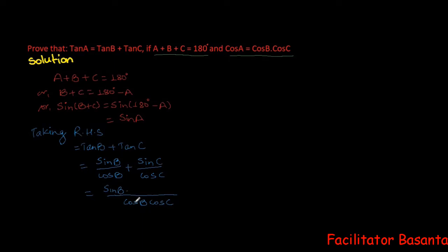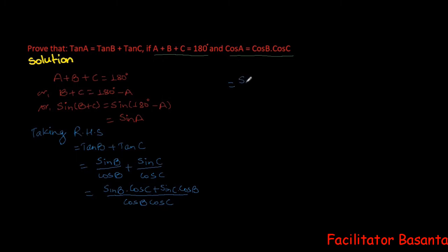This gives sin B times cos C plus cos B times sin C, divided by cos B times cos C. The numerator sin B cos C plus sin C cos B is the compound angle formula, which is in the form of sin(B plus C), and the denominator is cos B times cos C.